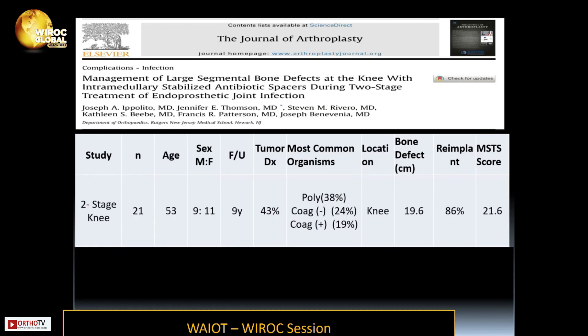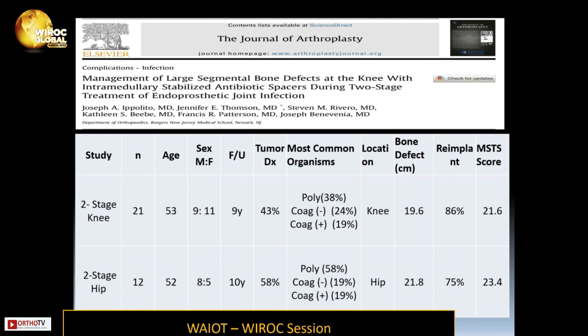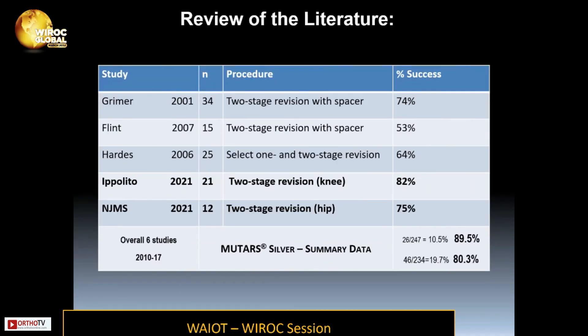Results from a recent publication on two-stage re-implantation show a re-implantation rate of 86% and an MSTS score of 21.6 out of 30, with a notable proportion of polymicrobial organisms. Two-stage hip data show somewhat lower success rates, also associated with a higher percentage of poly-organisms. A review of the literature demonstrates similar results across studies with very comparable success rates.